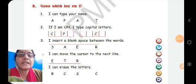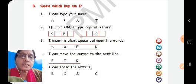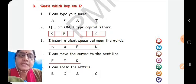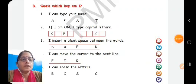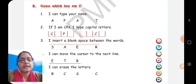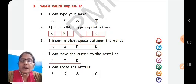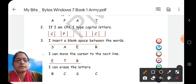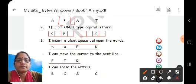Now question B: guess which key am I? First clue: I can type your name. The one who can type the name is the alphabet key. As we know, alphabet keys are used for writing names — our names have different alphabets, and we write our names using the alphabet keys. So the answer is alphabet key.